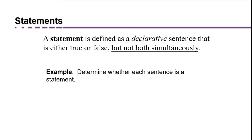So let's determine whether each of these sentences is considered a logical statement. A: The earth revolves around the sun. This is a declarative sentence, and we can determine whether it's true or false, but it can't be both true and false simultaneously, so it's a logical statement.